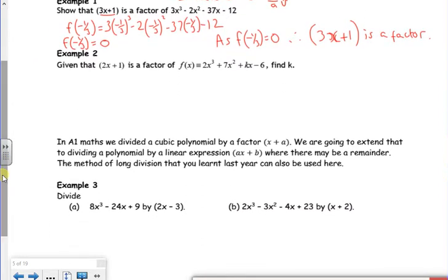Example two says, given that 2x plus 1 is a factor, find k. So I know that f of minus a half is going to be zero if 2x plus 1 is a factor. I'm going to use that fact to help me. So if I replace the x's with minus a half and put it equal to zero, I should be able to rearrange. So I've got 2 lots of minus a half squared plus 7 lots of minus a half. Sorry, that was a cubed, isn't it? Squared plus k lots of minus a half minus 6. That's equal to zero.